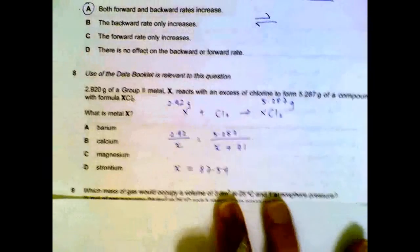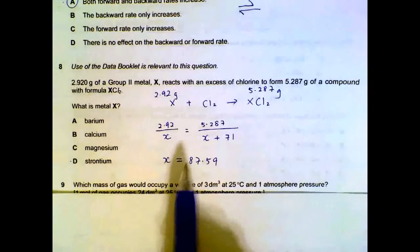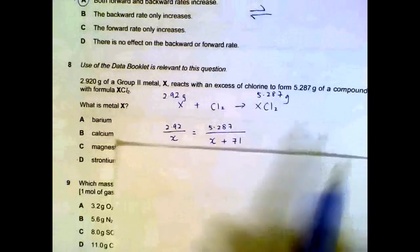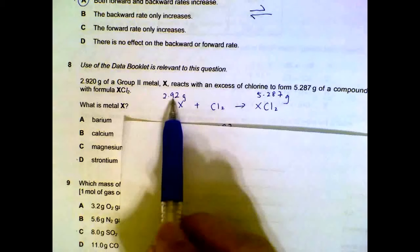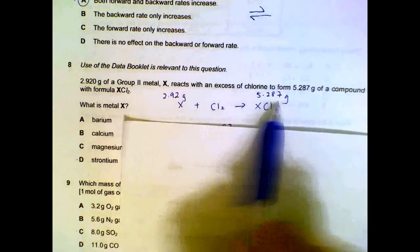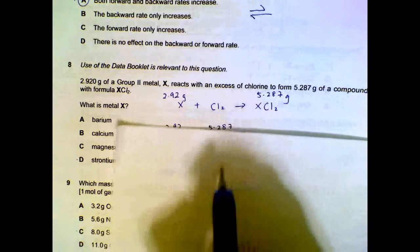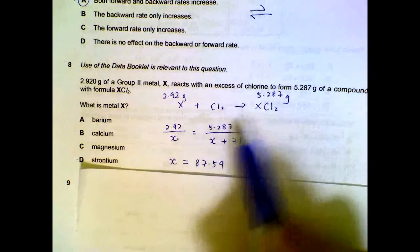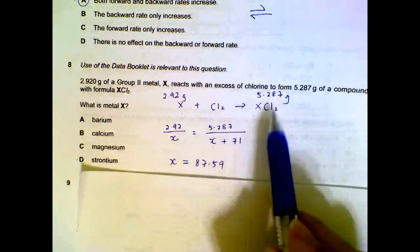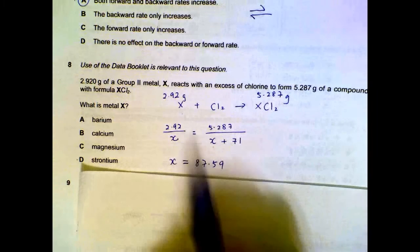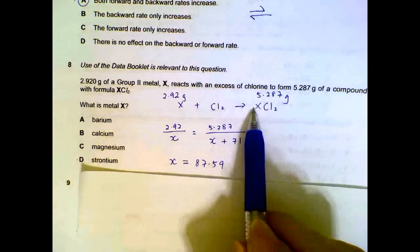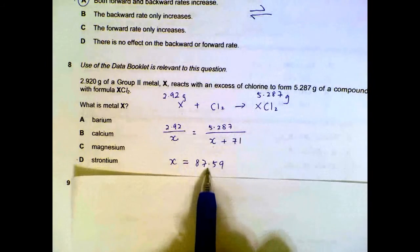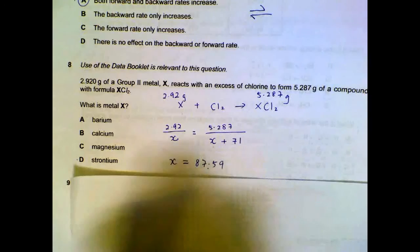Number 8. We have group 2 metal reacts with chlorine. We will get our metal chloride. So we form an equation. These are the masses that are involved. From the mass we will convert to moles which we don't know the MR but we leave it as unknown. 2.92 over MR of X, 5.287 over MR of X plus the chlorine here which is 71. The ratio is 1 is to 1 based on the balanced equation, so we equate these two together and then we solve for X. That gives us the MR of the unknown. We compare to the periodic table, we will get strontium.